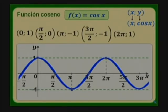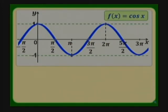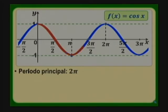El gráfico de la función coseno representa una oscilación y es una función periódica; se repite cada cierto intervalo del dominio. El periodo principal es 2pi, como se ilustra en color rojo. Esto significa que esa porción del gráfico se repite infinitamente hacia los positivos y hacia los negativos.